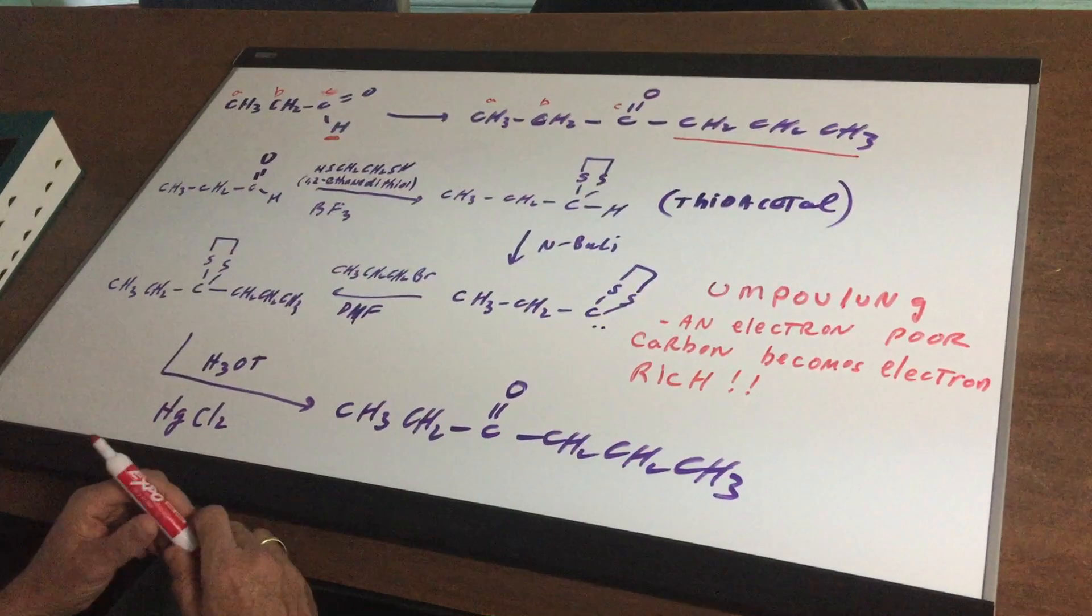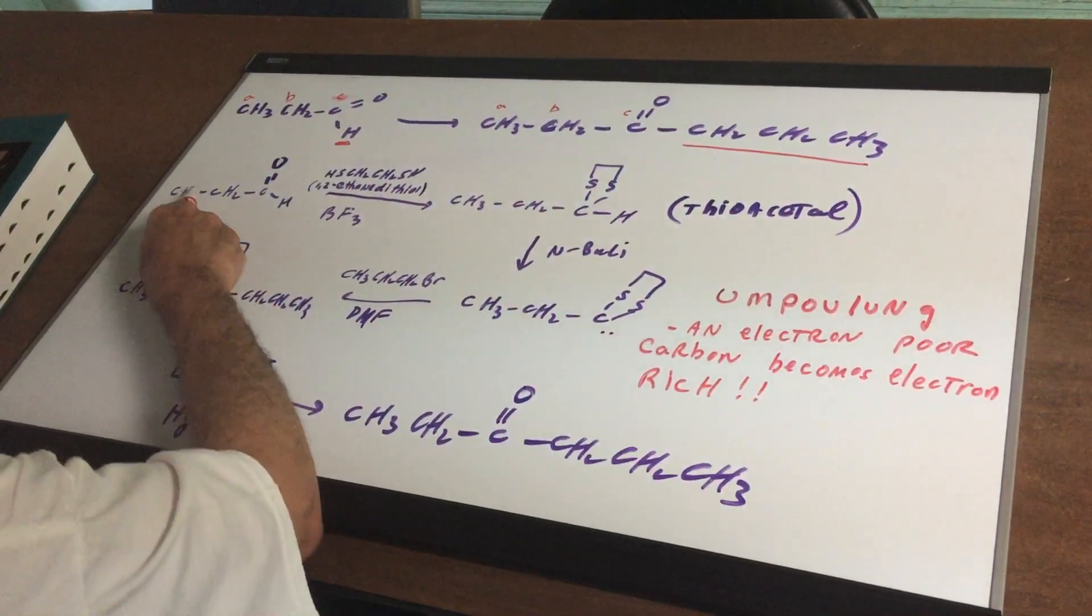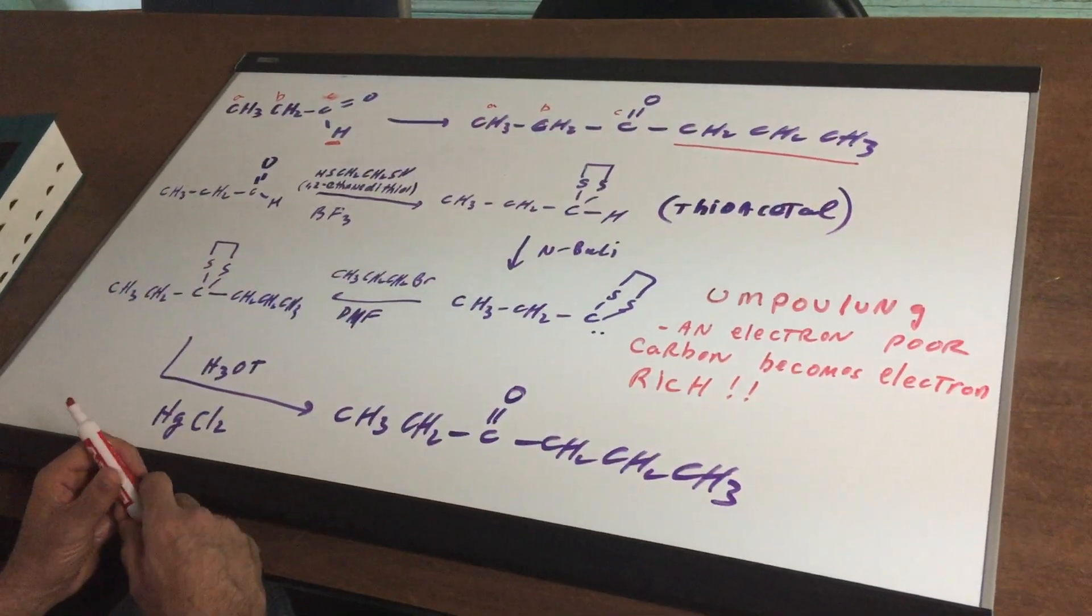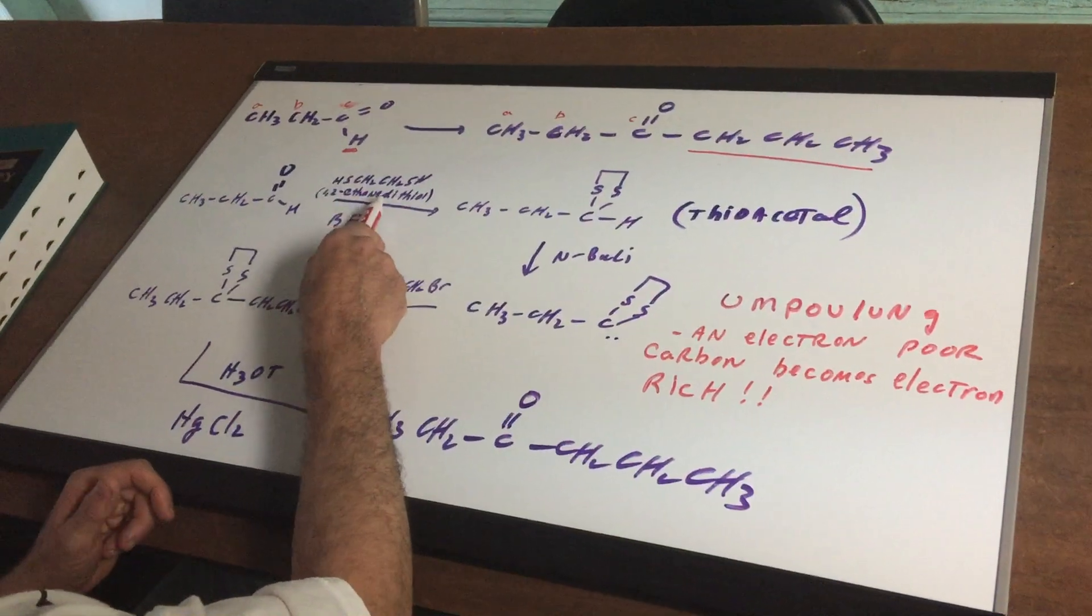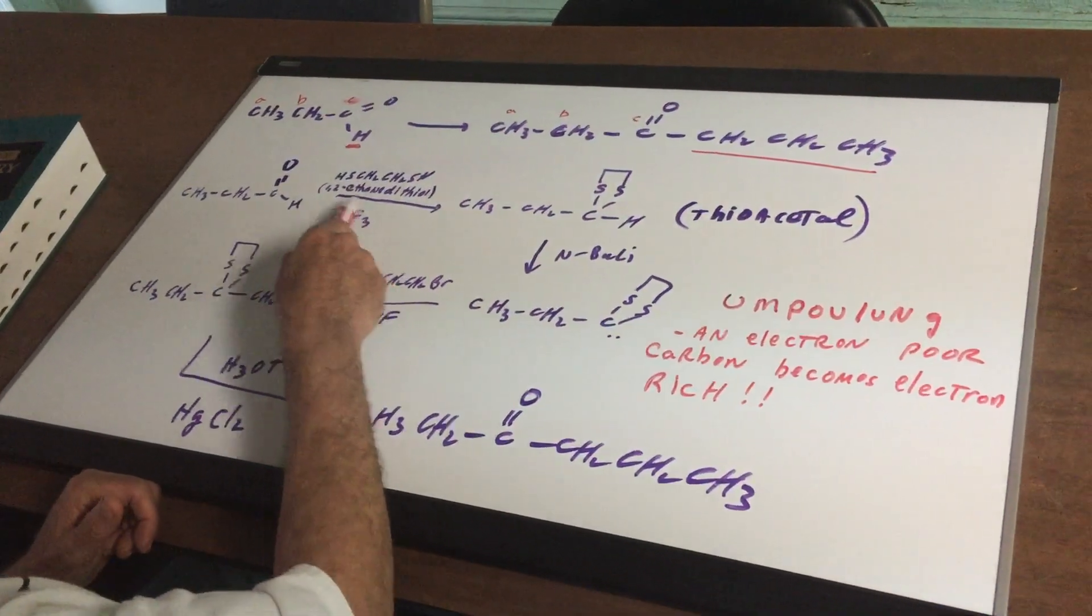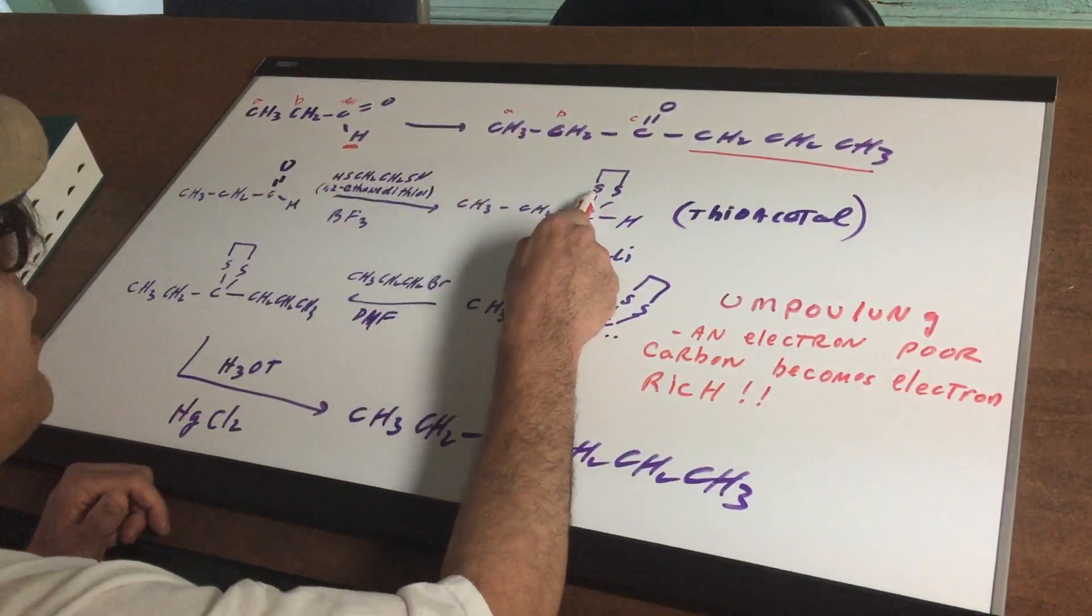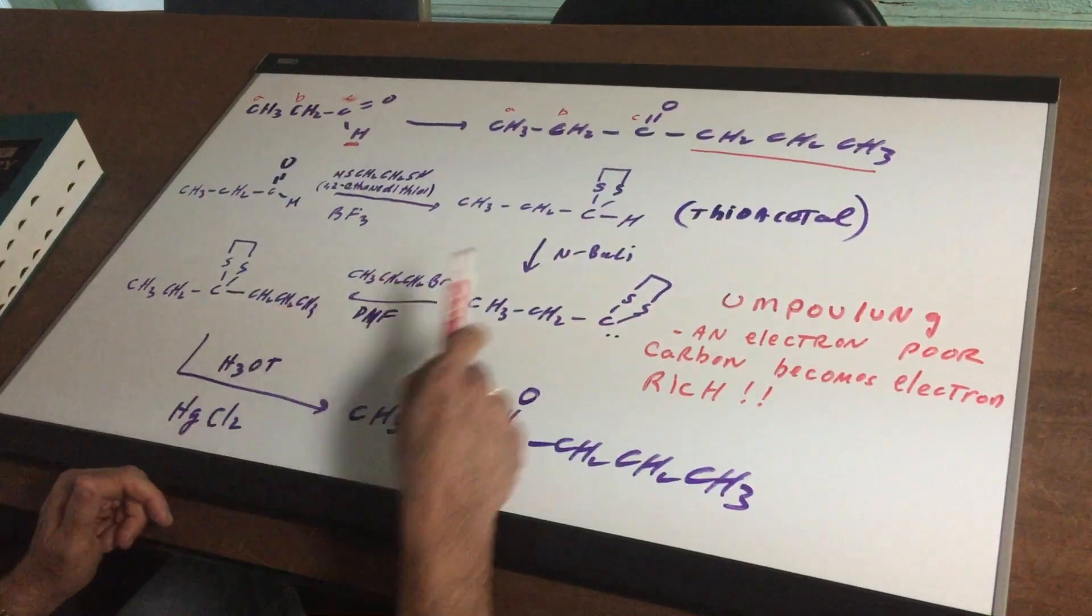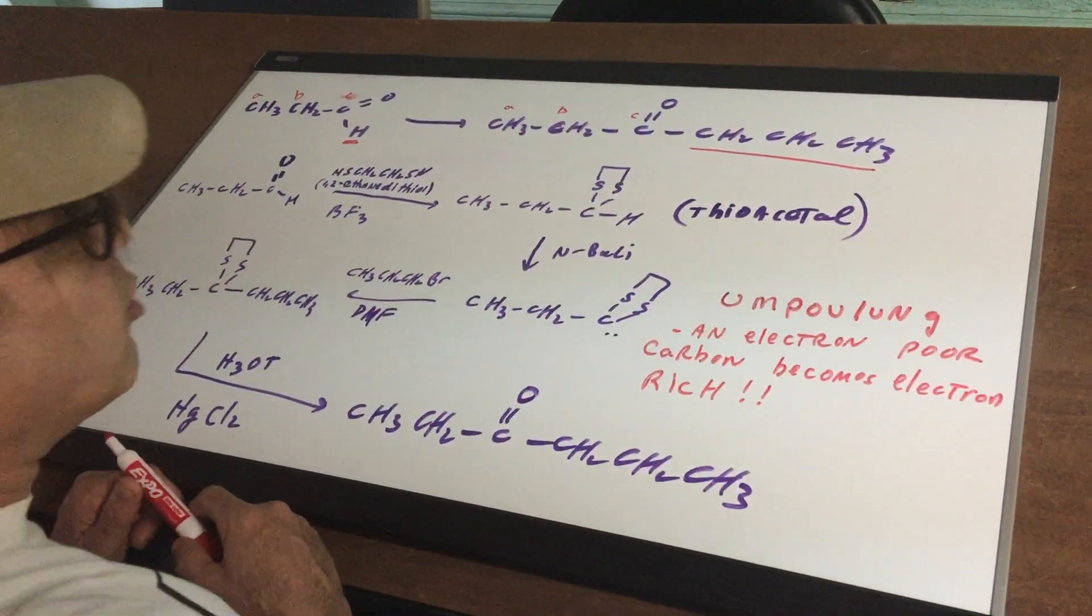So what we gotta do is we gotta make it acidic. Now what I'm gonna do is take the aldehyde and treat it with a chemical known as 1,2-ethane dithiol, and BF3 is simply the Lewis acid catalyst, and what it's gonna do is gonna get rid of the O and put on this protecting group, and we've now created what is known as a thio-acetyl group.